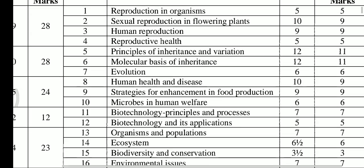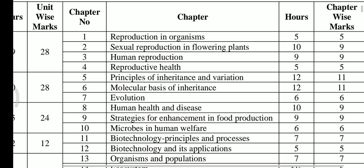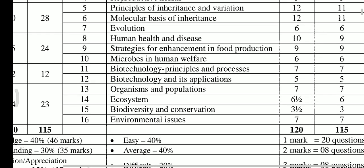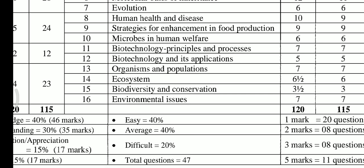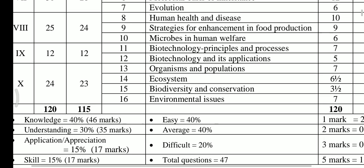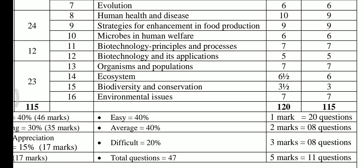Unit 8 carries 24 marks and has three chapters. Chapter 8, Human Health and Diseases, is for 9 marks. Strategies for Enhancement in Food Production is for 9 marks. Microbes in Human Welfare is for 6 marks.